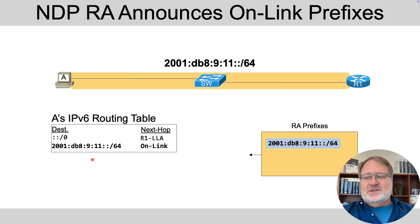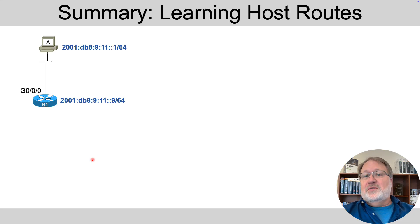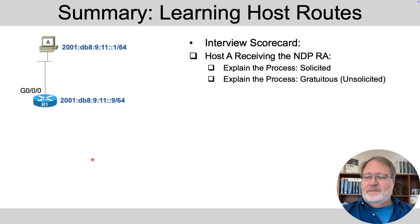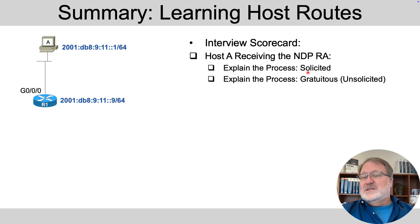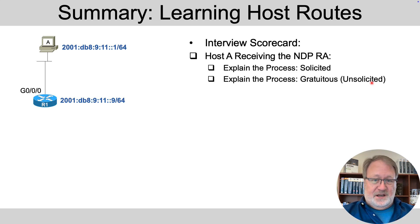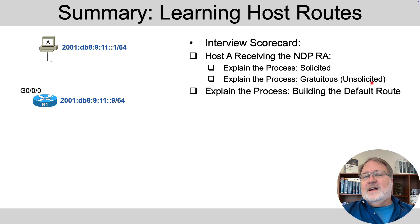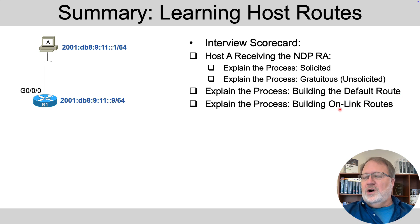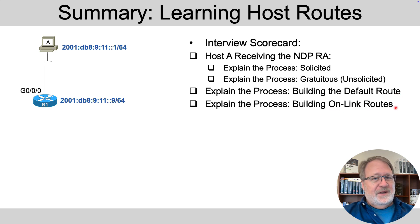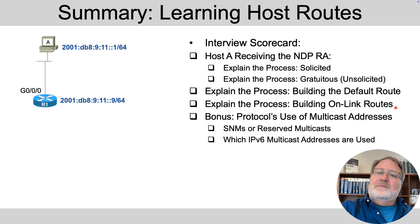There's a lot with NDP. To summarize what I'd be listening for on my interview scorecard: host A receiving the RA; explaining the solicited process with RS and RA, and the gratuitous process where the router just sends the RA; explaining how a host builds its default route and what that default route looks like; the process of building on-link routes; and as a bonus, the multicast addresses used with RS and RA messages.